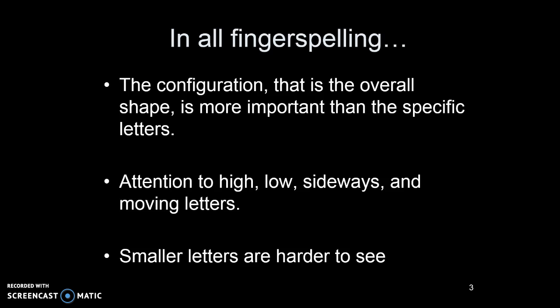In all forms of fingerspelling, the configuration — that is, the movement between letters — is much more important than simply looking at individual letters. This is why people who are reading fingerspelling read it as shapes rather than as individual letters. Notice that some letters are much easier to see: letters that are high up like B or W where the fingers are extended, letters that turn downward like P and Q, letters that are to the side like H and G, and letters that move like J and Z — these are easy to see and will stand out.